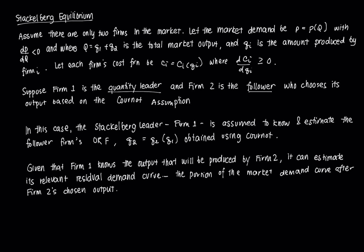So how does equilibrium work in this model? We discussed that the Cournot equilibrium lies somewhere between a monopoly and a perfectly competitive market, while the Bertrand model with homogeneous products acts very similarly to a perfectly competitive market. For the Stackelberg equilibrium, let's assume there are only two firms in the market. We let the inverse market demand function be downward sloping, with total market demand supplied by firm 1 and firm 2's output, where firm 1 is the quantity leader and firm 2 is the follower, each with their own cost functions where marginal cost ≥ 0.